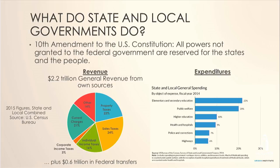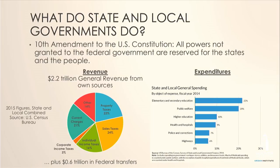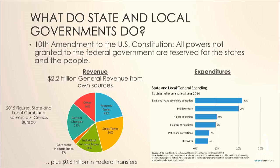First among those services is elementary and secondary education, funded and provided primarily by local school districts. Others include public welfare, higher education — such as state universities — health and hospitals, which includes part of Medicaid spending, police and corrections for public safety, and highways. These are vital public services that the federal government does not provide directly.